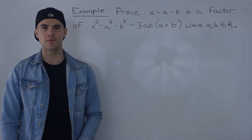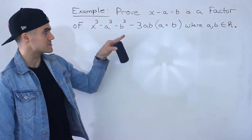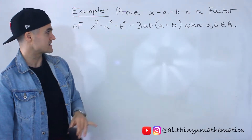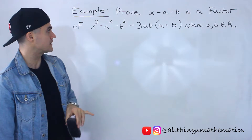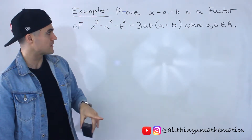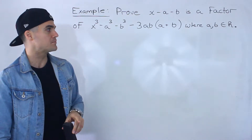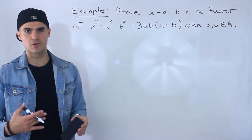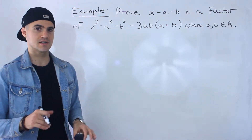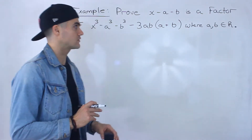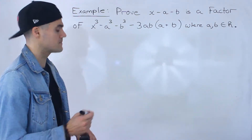What's up everyone? Patrick here. Welcome back. Moving on to the next question. We've got to prove that x minus a minus b is a factor of this polynomial: x to the power of 3, minus a to the power of 3, minus b to the power of 3, minus 3ab times (a plus b), where a and b are just some real number constants. This is a thinking question dealing with the factor theorem — a pretty unique question a student sent me, so I thought I would make a video for it.